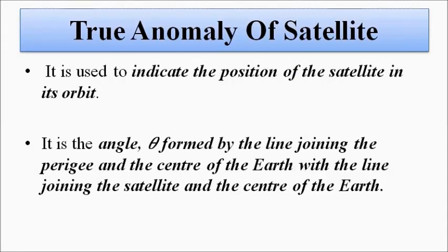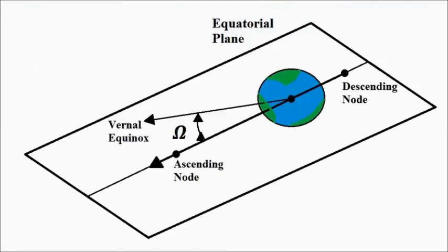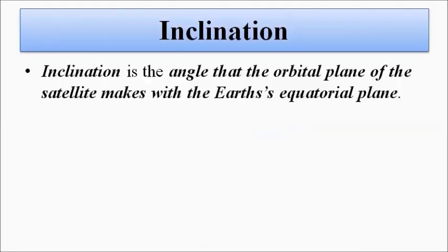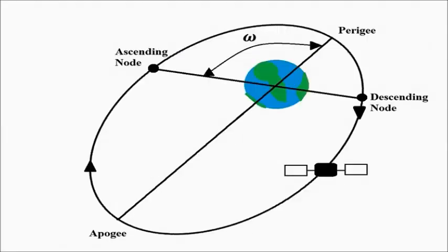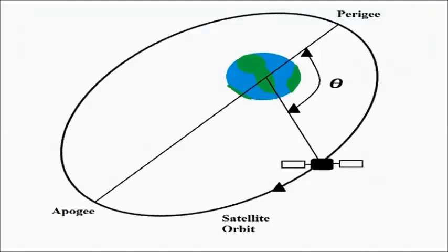In this video we discussed various orbital parameters: right ascension of ascending node, inclination, argument of perigee, and true anomaly of satellite. We have now covered most of the orbital parameters, and if anything important is left, a separate video will be made on that. I hope you liked this video. Please subscribe to the Engineering Tutorial channel for more videos related to engineering, science, and technology. Have a great day, thank you very much.